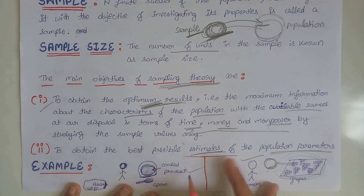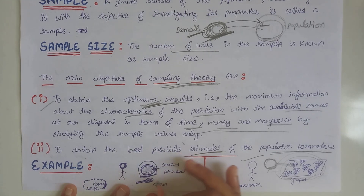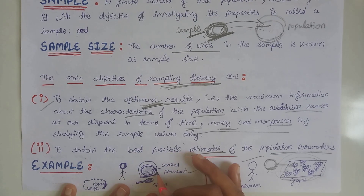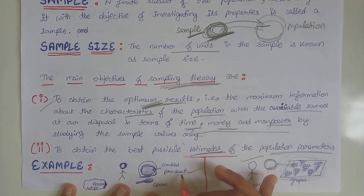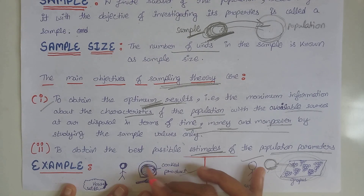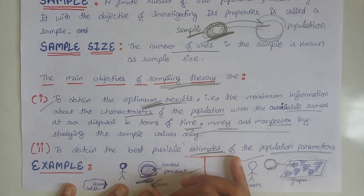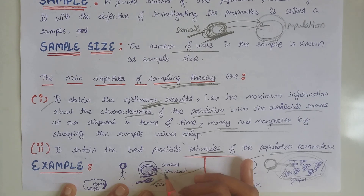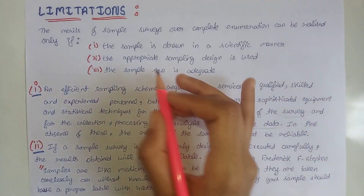Similarly, if a housewife cooks something in the kitchen and wants to know whether the salt or chili is okay, she will not taste the entire cooked product. She takes a spoonful as a sample, tastes it, and from that determines whether the salt and chili are okay in the whole cooked product.